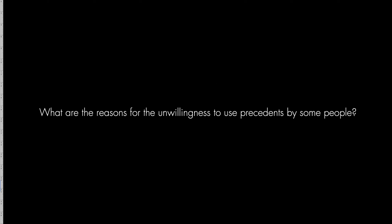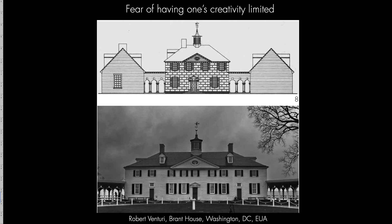Even though there is so much evidence that great architects started from history in their projects, why are so many architects unwilling to use them, at least in an explicit way? I would say there are four reasons. The first is the fear of having one's creativity limited. However, it's impossible to truly imitate, since the original situation and the one to which the precedent is transposed are always different — place, program and technique are all likely to differ. The scale of the precedent and that of the new object are also often different. Therefore, the result will always be a unique object.